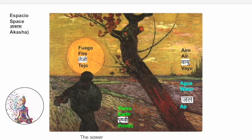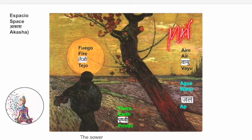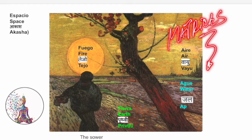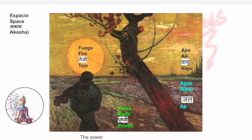Students who become teachers in this game can support the learning of others. The elements of nature — space, fire, earth, air, and water — are written in Spanish, English, and Sanskrit, because the conceptual maps offered at each level are connected with these elements.